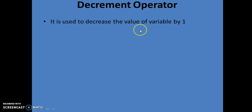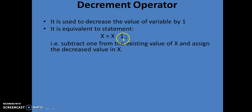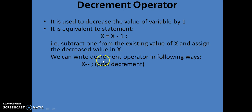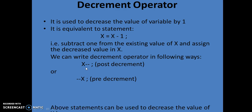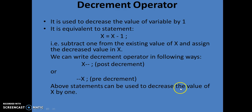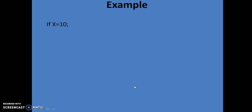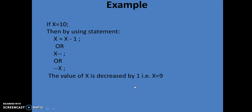Now let's move on to the decrement operator. It is used to decrement the value of a variable by 1. It is equivalent to the statement x = x - 1, that is, subtract 1 from the existing variable and assign the decreased value in x. We can write the decrement operator as x-- (post-decrement) or --x (pre-decrement). For example, if x is 10, then using x = x - 1, x--, or --x, the value of x is decreased by 1 — that is, x becomes 9.